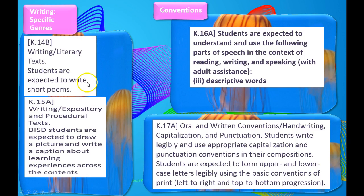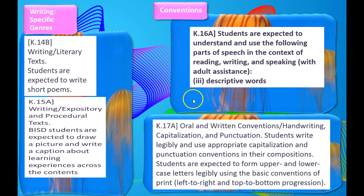We're going to be writing poetry and procedural text. Students are expected to draw a picture and write a caption about a learning experience across the content areas. In conventions, they'll be learning about descriptive words — there are things in the clarifier on K16A that will help you teach the beginnings of adjectives in their writing. We want students to write legibly, forming upper and lower case letters using the basic conventions of print, so make sure our kids are really doing well with their handwriting.